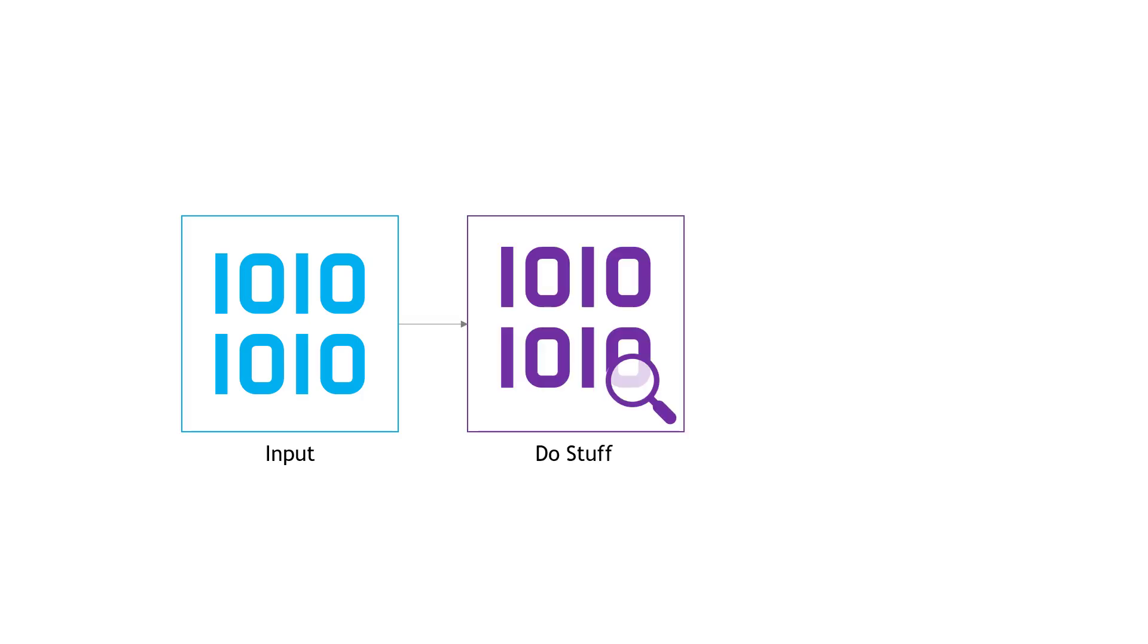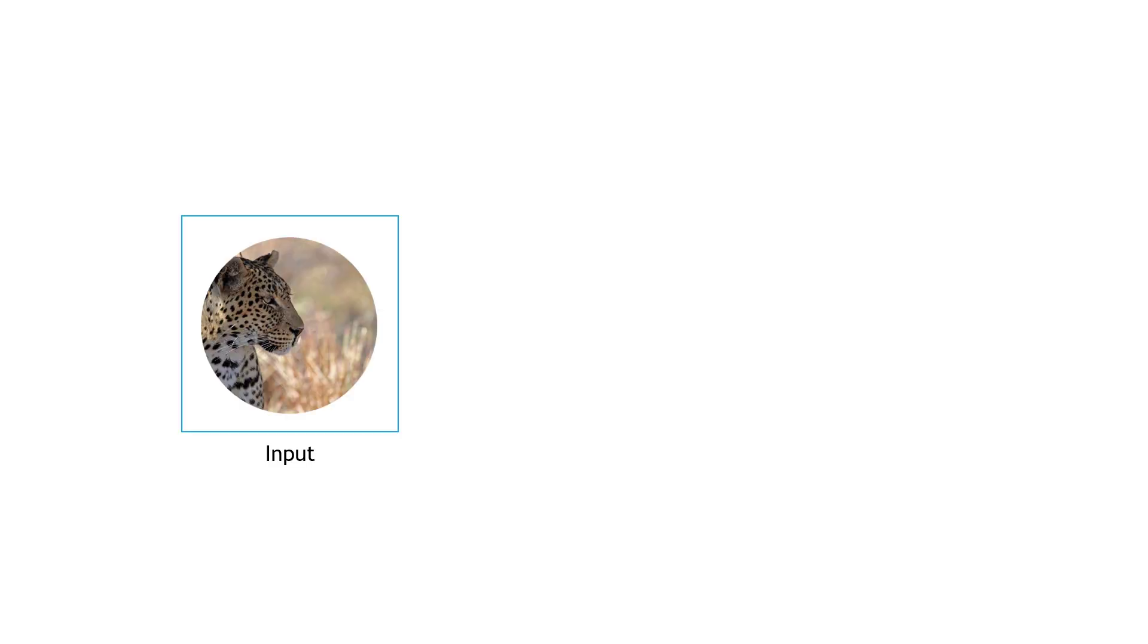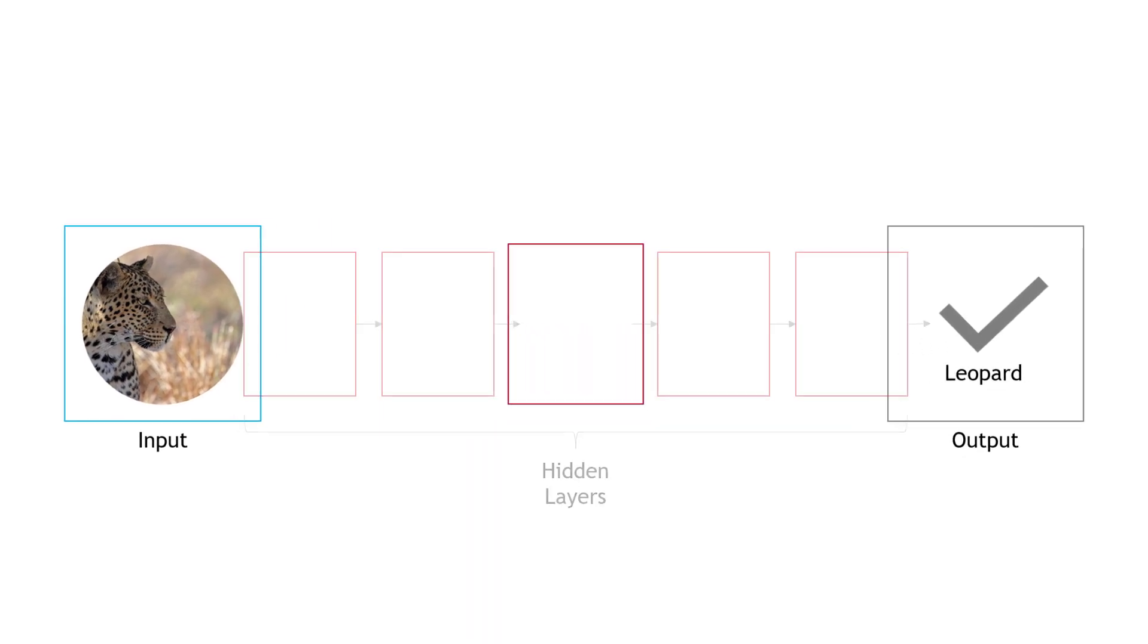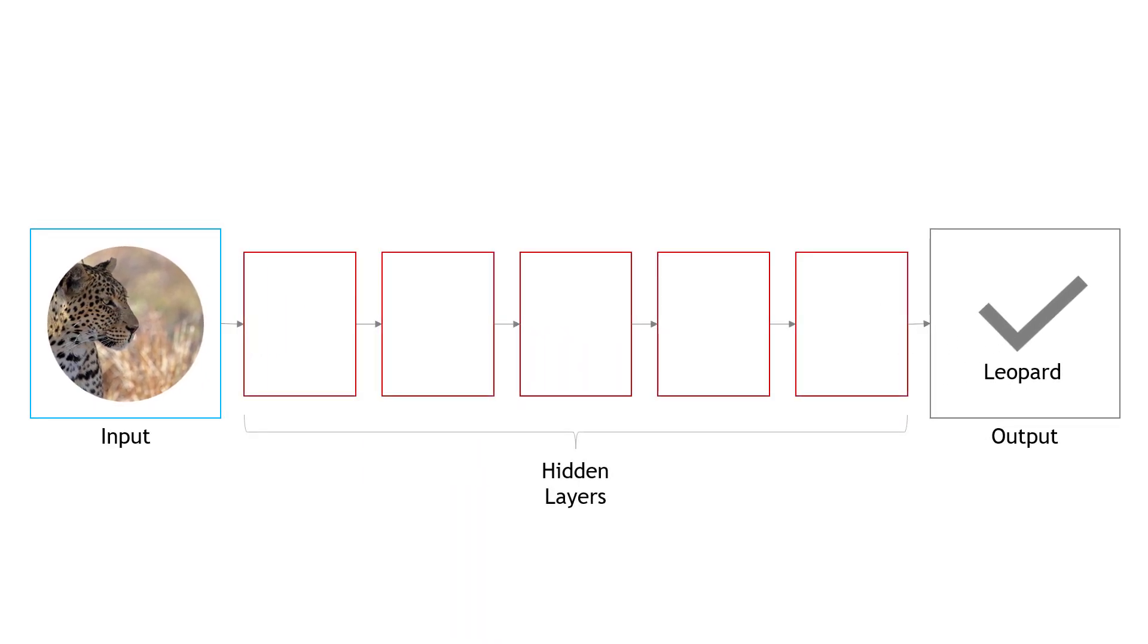Now let's build on this and talk about how it works in a neural network. At a very high level, it's similar. We pass something into the network, the input, we do stuff, and then there's output. So thinking about our leopards, we would pass in a photo of a leopard, we do stuff, and then at the end, we're able to say, aha, that looks like a leopard. But this part here in the middle where we do stuff, that's actually where the work happens. There's a lot going on here, and it happens in what are called hidden layers.